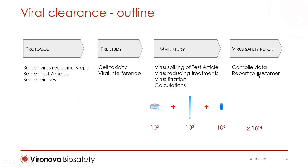When the main study is completed, the virus reduction values from the process steps tested are combined, giving an estimate of the overall viral reducing capacity. This is done for each separate virus. Finally, a report is written and sent to the customer.